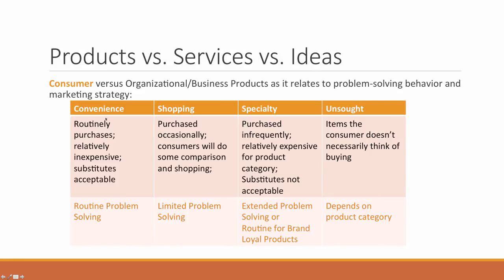For example, if we're selling a convenience product, our customer is probably going to use routine problem-solving behavior, which explains why they'll quickly make the purchase and readily accept substitutes. If we're selling shopping products, consumers will likely go through limited problem-solving behavior. If we're selling specialty products, consumers will probably use extended problem-solving, unless they are brand loyal, in which case they may use routine problem-solving behavior.